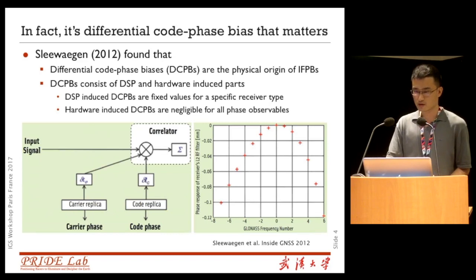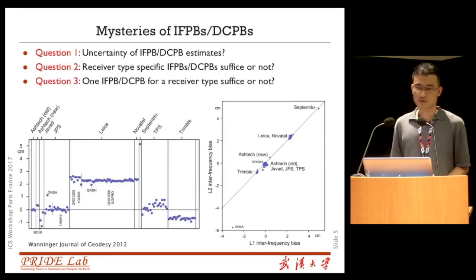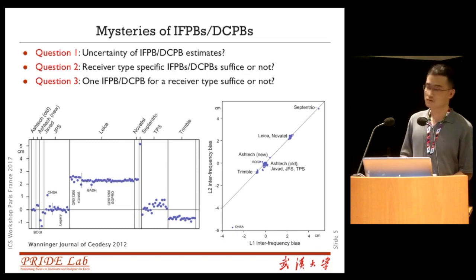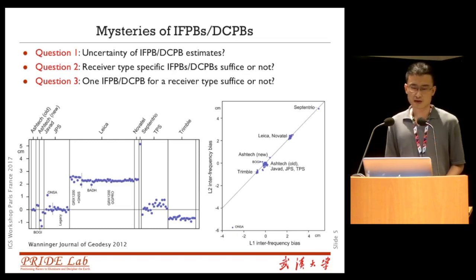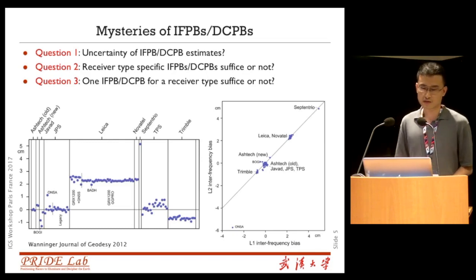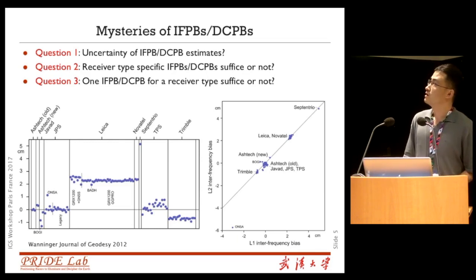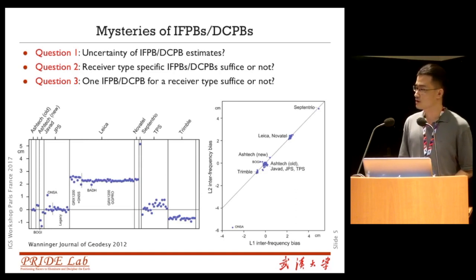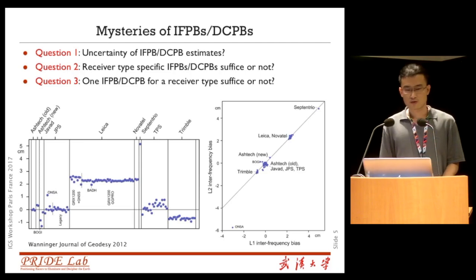Here we will explore the nature of IFPB or DCPB. There are three questions we want to answer: one, what is the uncertainty of IFPB/DCPB estimates? Two, does receiver-type-specific IFPB or DCPB suffice? Three, does one IFPB or DCPB per receiver type suffice?